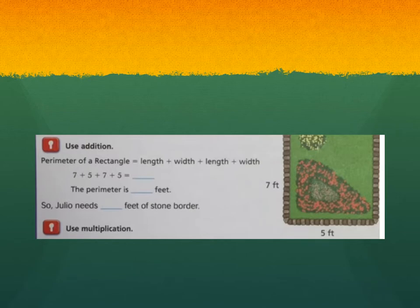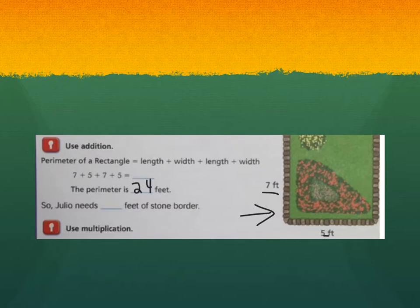So this is what we've been doing up to date. You can use addition to find the perimeter. So if we were using addition, you could use seven plus five plus seven plus five. And we know that seven plus five is 12 and another 12 would be 24 feet. So we know that Julio needs 24 feet of stone border. So addition is the strategy we have been using to date.